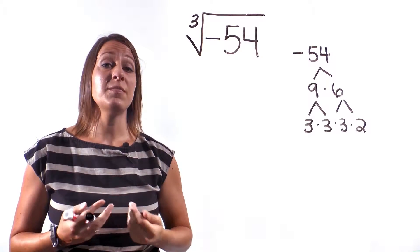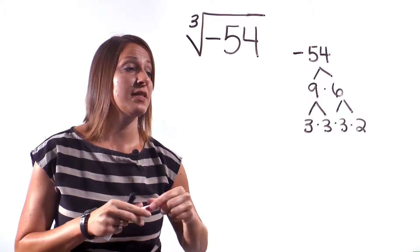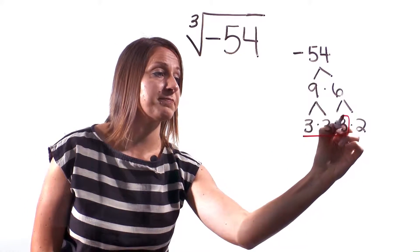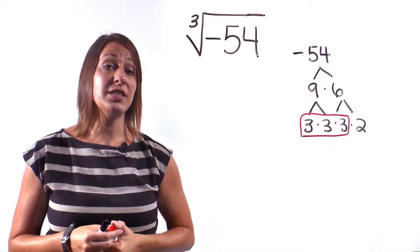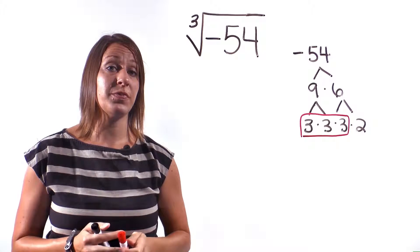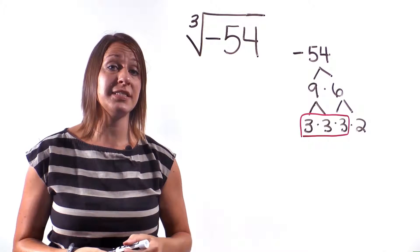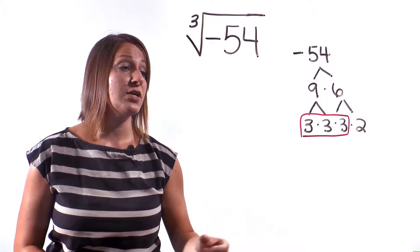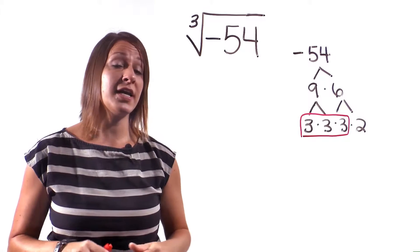Okay, because this is a cubed root, we're looking for groups of 3. And we actually have 3 3s. But this was a negative 54. And to get a negative 54, one number has to be positive and the other negative. So we could either have negative 3s or a negative 2.